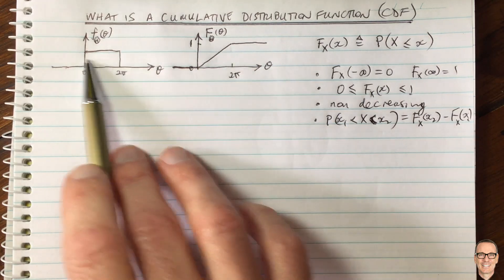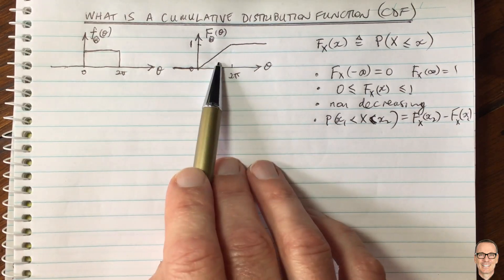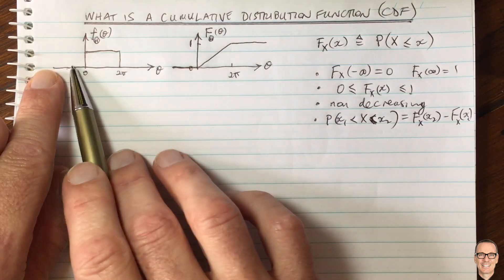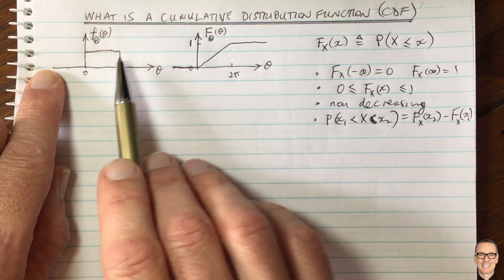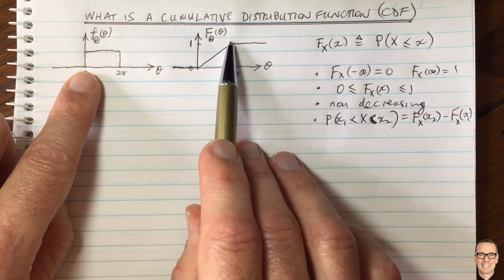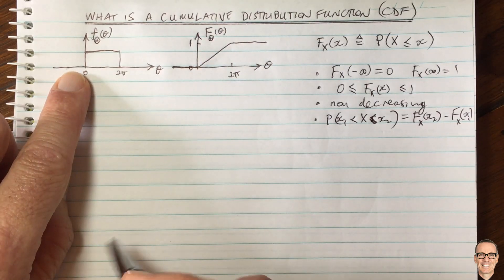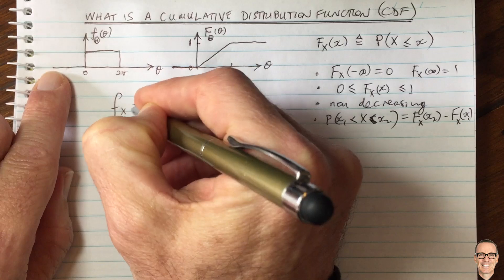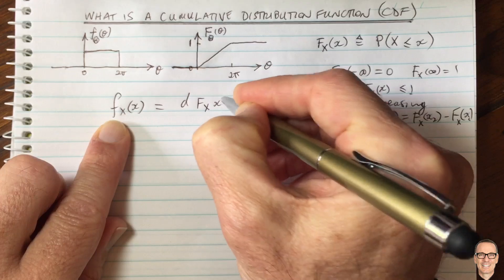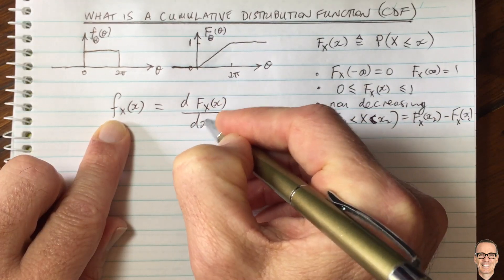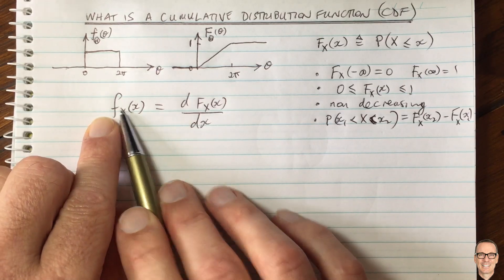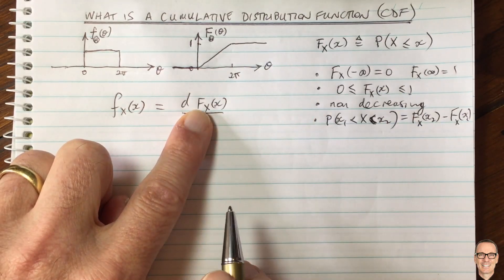What is the formal relationship between the PDF and CDF? Intuitively I've talked about accumulating the density moving to the right. In the reverse direction, it's a derivative relationship: the slope of the CDF gives you the height of the PDF. So f_X(x) — the PDF — equals the derivative of the CDF with respect to x. This is the relationship between the probability density function and the cumulative distribution function.